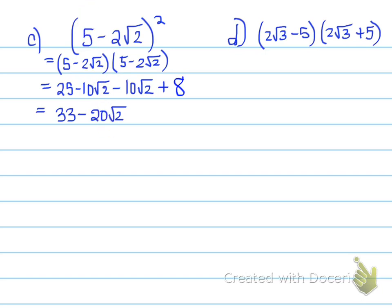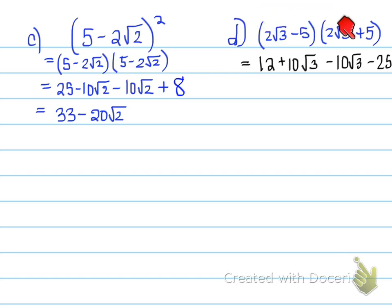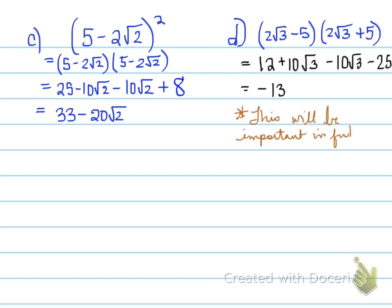Part D uses a double set of brackets. Expanding: 2 times 2 is 4, root 3 times root 3 is 3, so 4 times 3 gives 12; then plus 10 root 3 minus 10 root 3 minus 25. The root 3 terms cancel, and 12 minus 25 gives negative 13. Interestingly, we started with radicals and the final answer is just an integer — this will be important later in the course. That's the end of the video — have a numerical day!